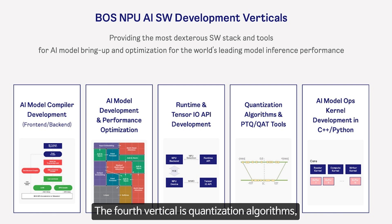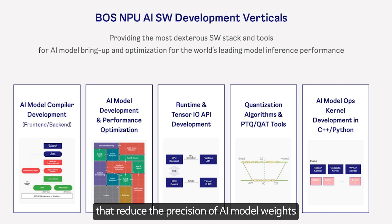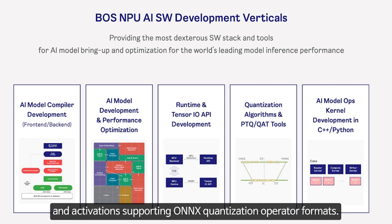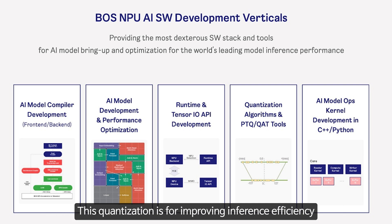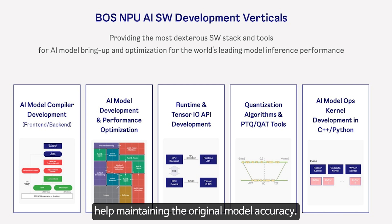The fourth vertical is quantization algorithms and PTQ-Q80 tool development. This involves developing algorithms that reduce the precision of AI model weights and activations, supporting ONNX quantization operator formats. This quantization improves inference efficiency without compromising model accuracy. We also provide accuracy debugging tools that help maintain the original model accuracy.